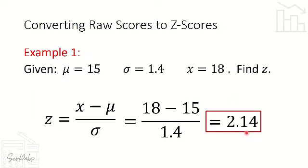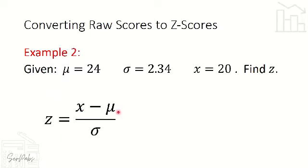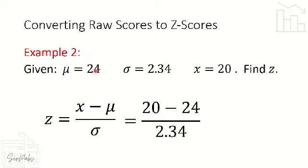If we need to find the probability, it will be easier to look up in our Z score table. For example number 2, we have a mean of 24, standard deviation of 2.34, and X is equal to 20. Using the formula Z = (X − mu) / standard deviation, we substitute: 20 minus 24 over 2.34. Notice that our raw score is lower than our mean, so therefore it will be a negative Z score.